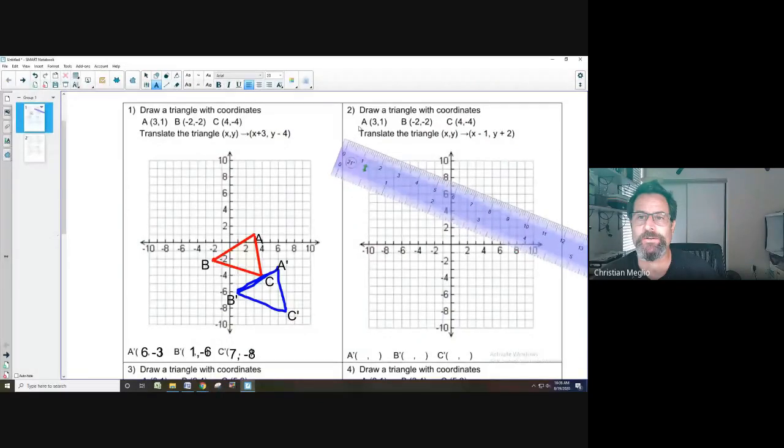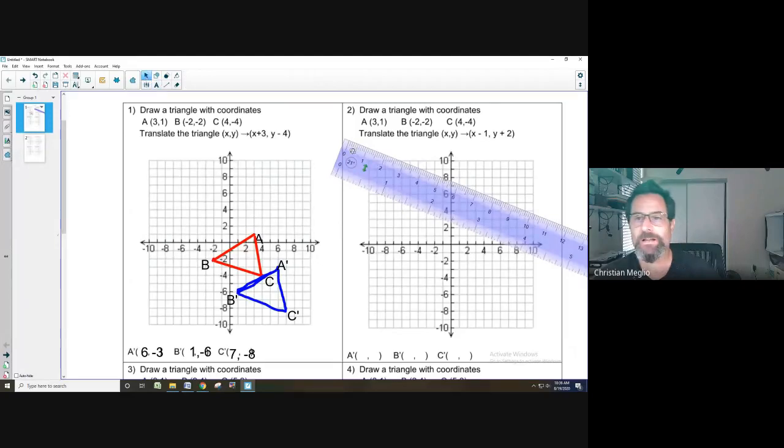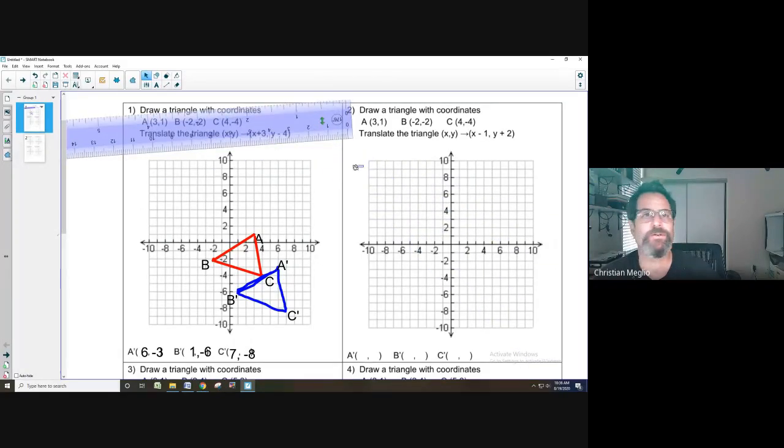Alright, so on number two we had to do a translation. Point A is at (3, 1). This is our pre-image at (3, 1). Point B is at (-2, -2) and C at (4, -4).